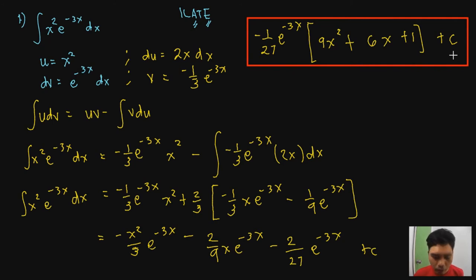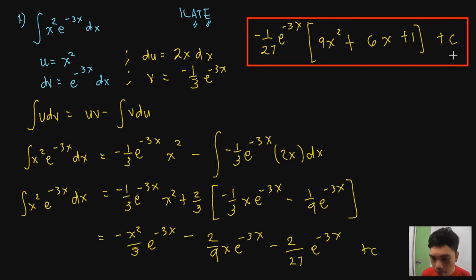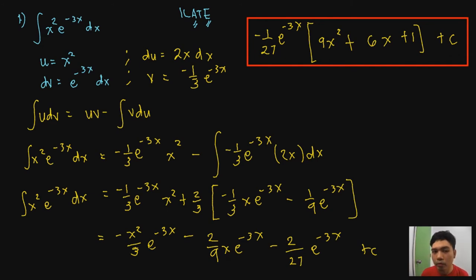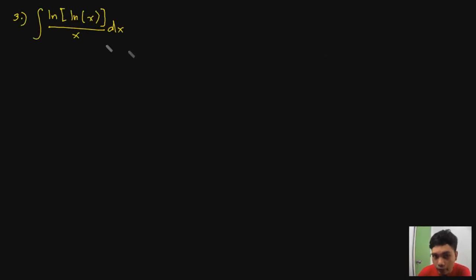Checking against the provided answer: both are the same — different factoring but each term matches. For instance, (2/9)x and (2/27) correspond correctly when factored. Just a quick reminder: in IBP, always find u and dv first. When a remaining integral appears, it must be readily integrable or you perform another IBP.